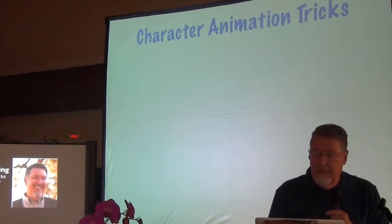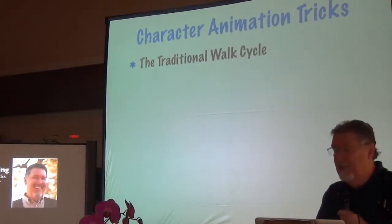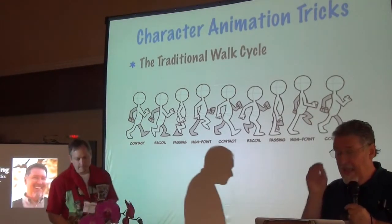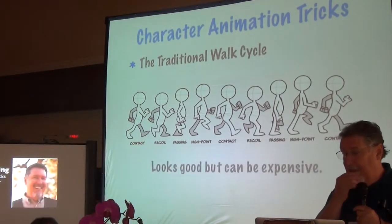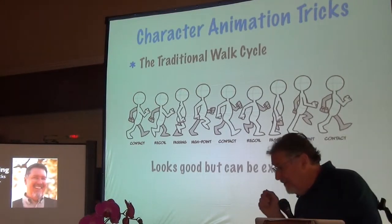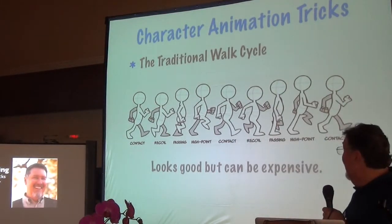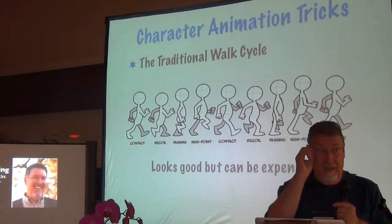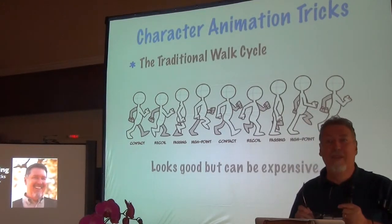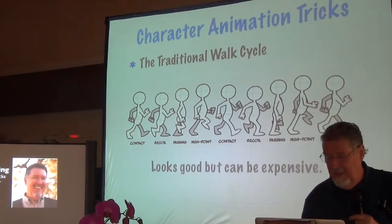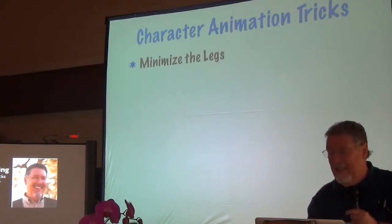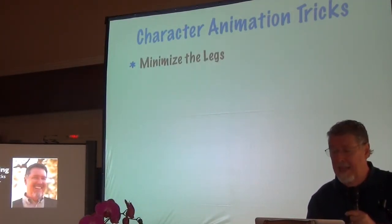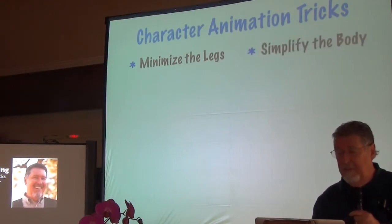In a traditional walk cycle, this is what it looks like — and it looks really good, but it can be really expensive. Especially if you've got characters walking in different directions, if they're running, if they're doing these things — this is why animation gets expensive. So there are a bunch of tricks to make it happen easier, and they're about how to minimize the legs or simplify the body.